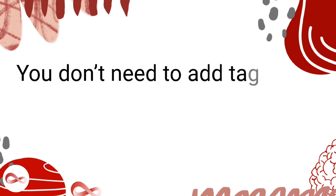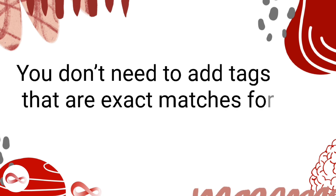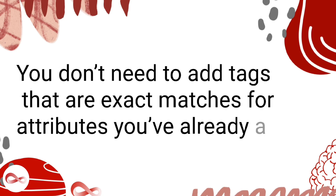You might describe the pattern on your t-shirt as nature-inspired, but don't miss an opportunity to add the plants and trees pattern attribute. Once you have added all the attributes that could describe your item, you can use your listing description, title, and tags to describe it in your own terms.